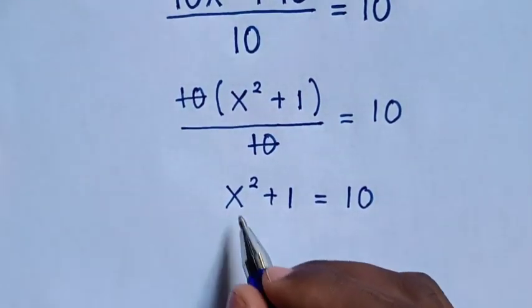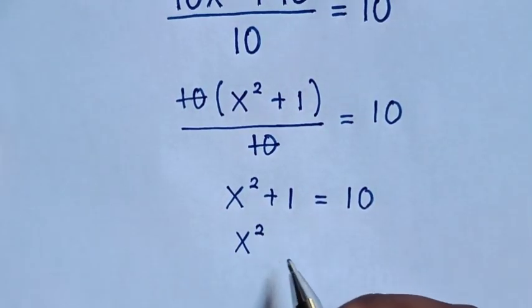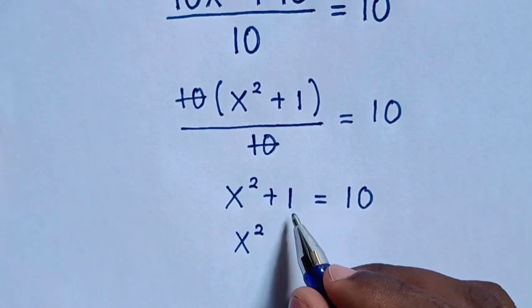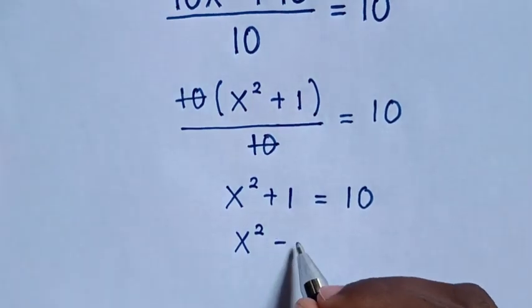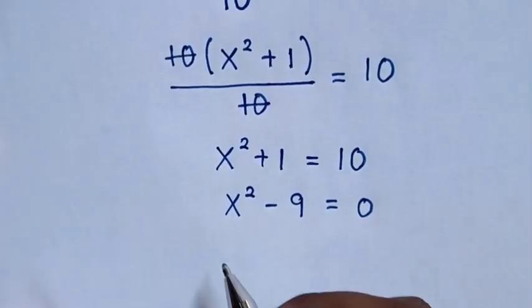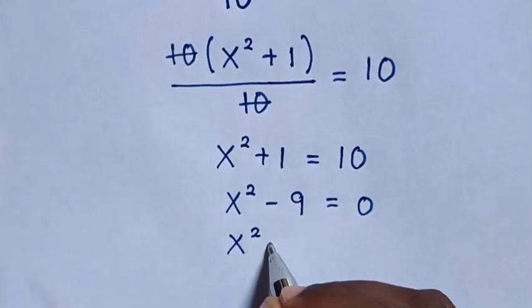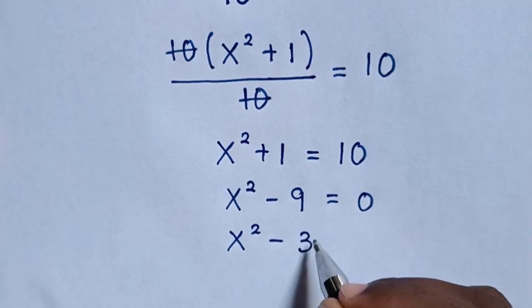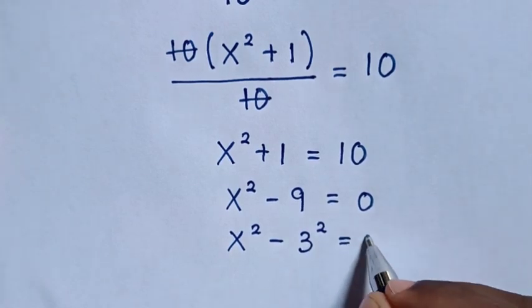Then in next step, it will be x², then we take 10 to the left side, so it will be negative 10 plus 1 is negative 9 is equal to 0. Then it will be x² minus 9 is same as 3² is equal to 0.